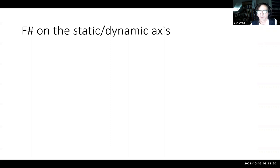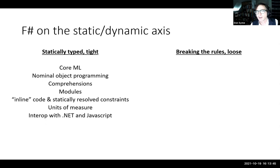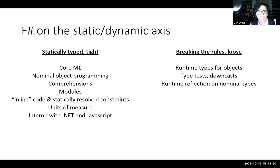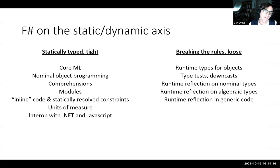We took that static world and extended it in various ways: nominal object programming, comprehensions, modules, units of measure, and interop. That's the statically typed world — very productive programming. And then we also broke the rules in a whole lot of ways to make F-Sharp actually quite a dynamic language. Most of these aren't particularly remarkable by the standards of other languages, but from the point of view of the ML workshop or that class of programming languages, I would probably have to justify each of these.